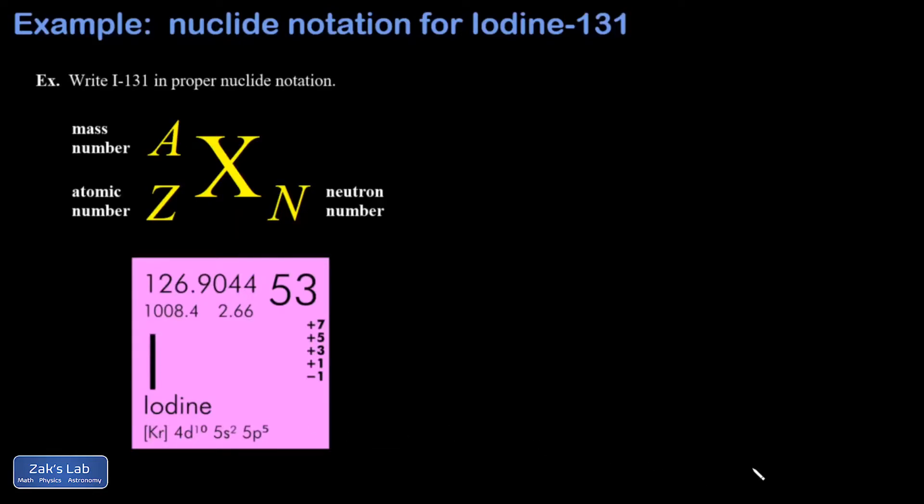In this video we're asked to write iodine-131 in proper nuclide notation. At the top here we have our general nuclide notation where I put in an X just representing some element on the periodic table.